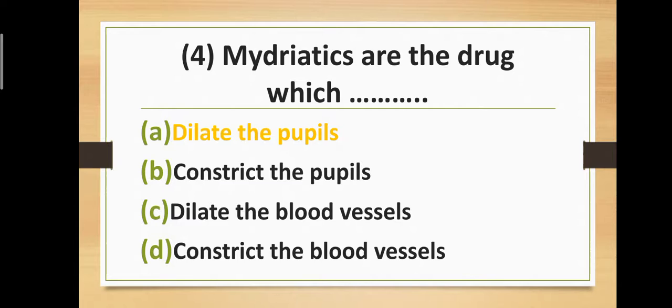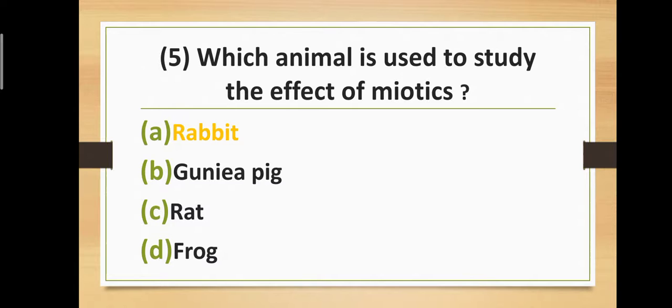Question number four: Mydriatics are drugs which — Option A: Dilate the pupils. Option B: Constrict the pupils. Option C: Dilate the blood vessels. Option D: Constrict the blood vessels. Correct answer is Option A — Mydriatics are drugs which dilate the pupils.